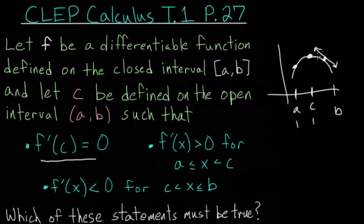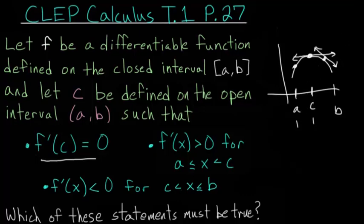This leads us to the conclusion that at point c, the function has a maximum value, because the tangent line there is horizontal — the slope transitions from positive to zero to negative, which is the hallmark of a local maximum.